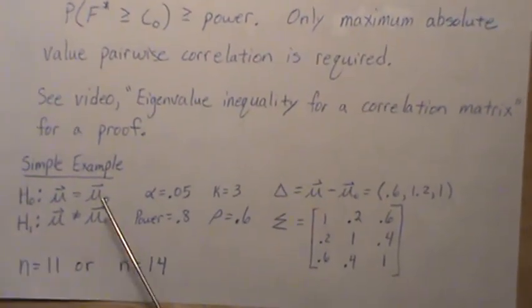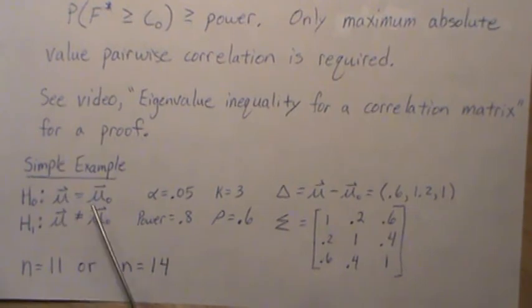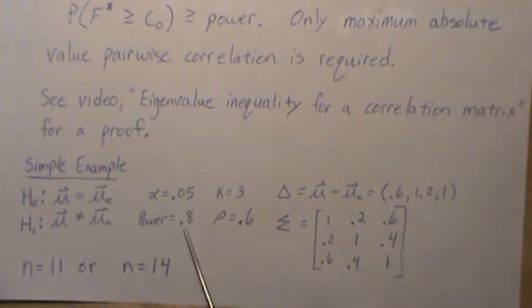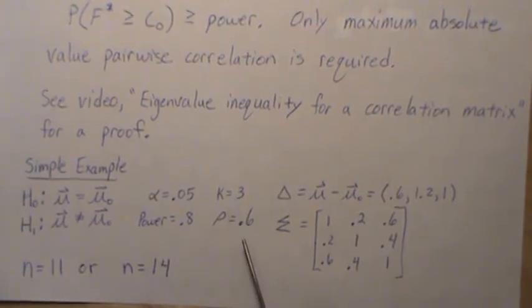Now, as a quick example, let's say we want to test the mean vector is some constant vector, or not equal to that constant vector. We set alpha equal 0.05, power 0.8. Let's say we have a three-dimensional vector. Here, the shift, the delta that we want to detect is 0.6, 1.2, and 1.